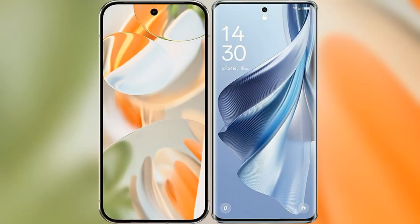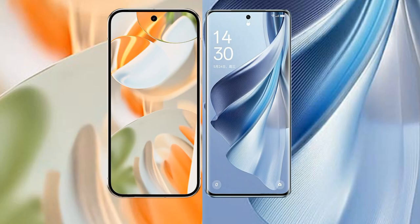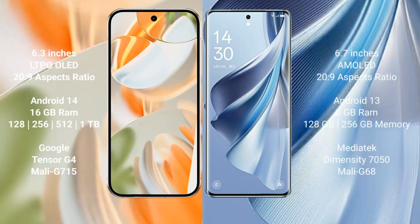I will compare the new Google Pixel 9 Pro with Oppo Reno 10. Google Pixel 9 Pro has a 6.3 inches LTPO LED display and costs Saksa Peso 22.9. Oppo Reno 10 has a 6.7 inches AMOLED display and also costs Saksa Peso 22.9.